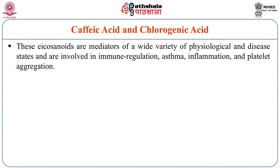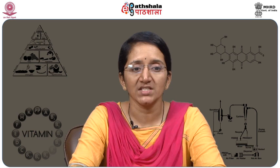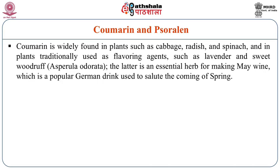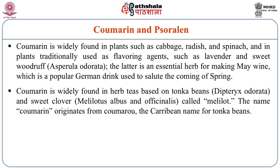These eicosanoids are mediators of a wide variety of physiological and disease states and are involved in immune regulation, asthma, inflammation and platelet aggregation. The next toxicant is coumarin. Coumarin is very widely found in plants such as cabbage, radish and spinach, and in plants traditionally used as flavoring agents like lavender. It is widely found in herb teas based on tonka beans and sweet clover. Purified coumarin was once used as a food additive but was banned by the US FDA after it was discovered that high doses of coumarin cause liver damage in tested animals.